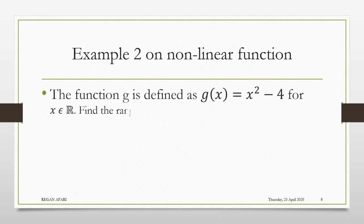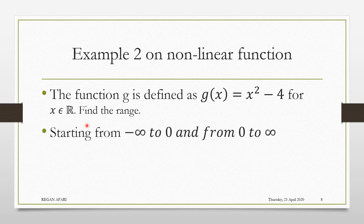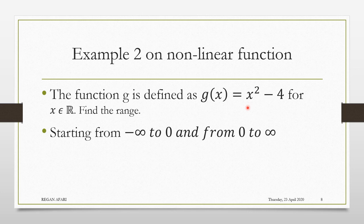Let's consider another example. The function is defined as g of x equals x squared minus 4, and the domain is all sets of real numbers. This means we can go from negative infinity to 0 and then from 0 to positive infinity. Now, x squared means that whether you use a negative number or a positive number, the answer is always going to be positive because it is squared. For example, negative 2 squared gives 4, and negative 3 squared gives 9.